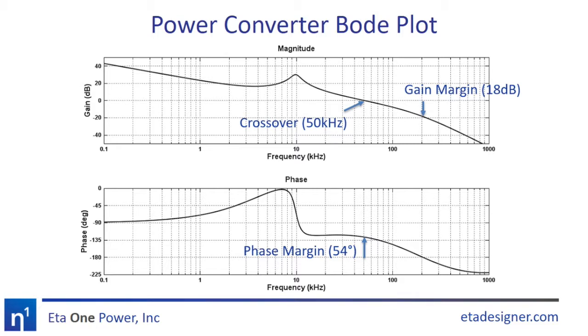The crossover frequency of our system represents its bandwidth, and the phase and gain margin represents its stability. Because both are positive by a reasonable margin, our converter is stable.